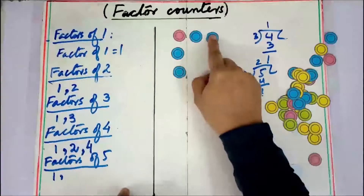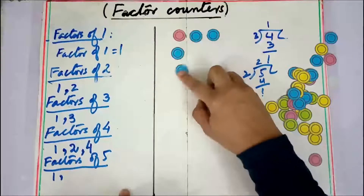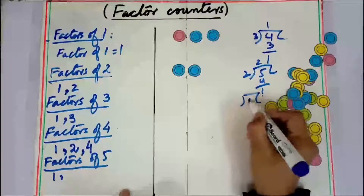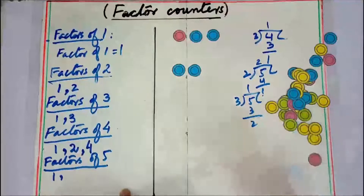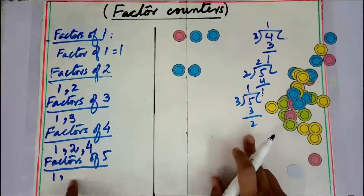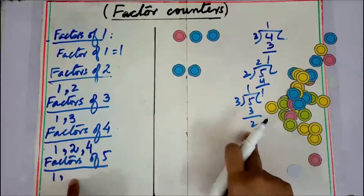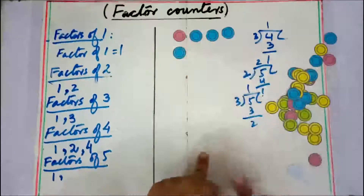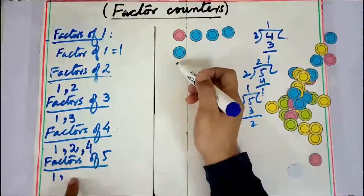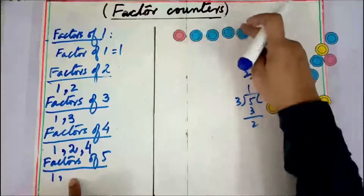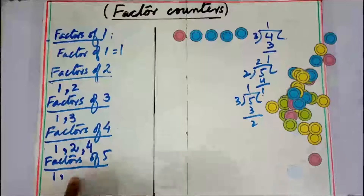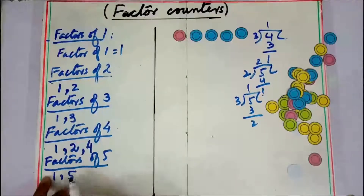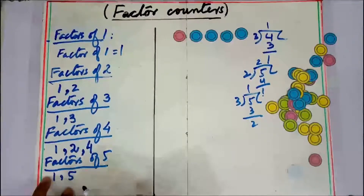Can we make a group of three? No — there would be two as a remainder, so three is not a factor of five. For four — there would be one as a remainder, so four is also not a factor. For five — we can make one group of five, so five is a factor. The factors of five are one and five.